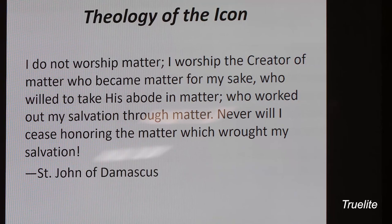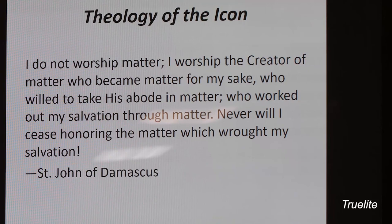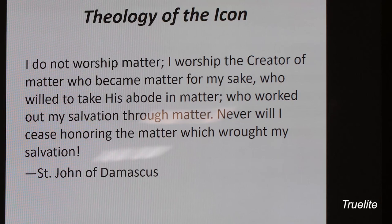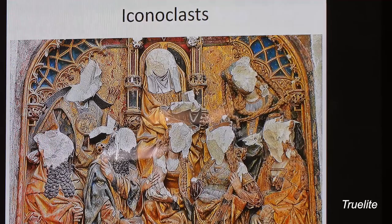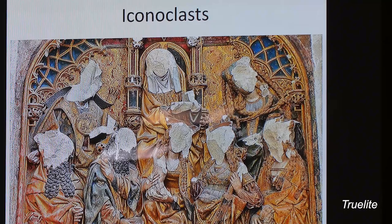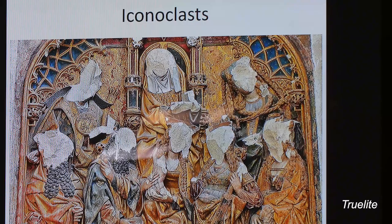We don't worship wood and paint — we don't kiss an icon because we think that is the saint — but rather we venerate the prototype who is behind the saint. The iconoclasts went to every face in the old images and took a chisel and hammer and destroyed them. So we have many examples of old art with destroyed faces. That's why so few early icons survived.